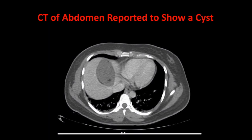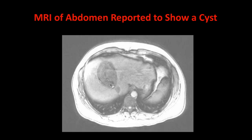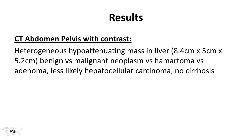She had a CT scan of her abdomen, which showed a cyst — here is the liver, and this large pale area is the cyst. Looking at the MRI for more detail, we see a large cyst with a little irregularity inside. The radiologist described a heterogeneous, non-uniform mass in the liver, just over 8 by 5 by 5 centimeters — about 3 by 2 by 2 inches — with a broad differential. The liver itself was otherwise normal with no cirrhosis reported.